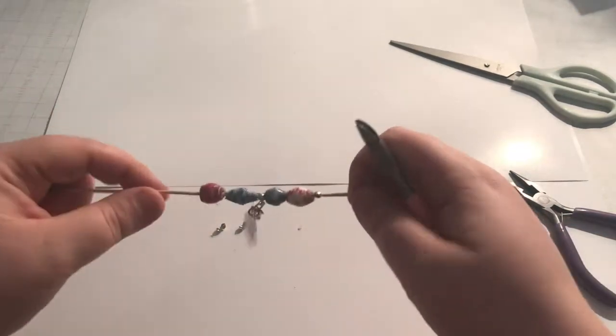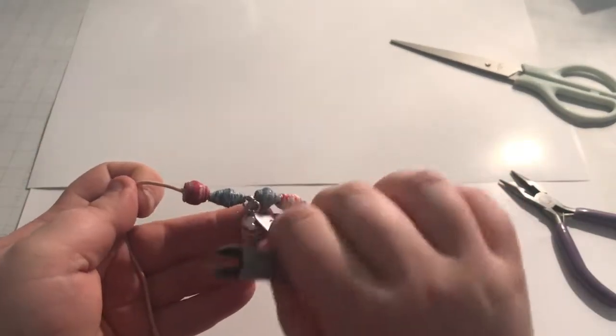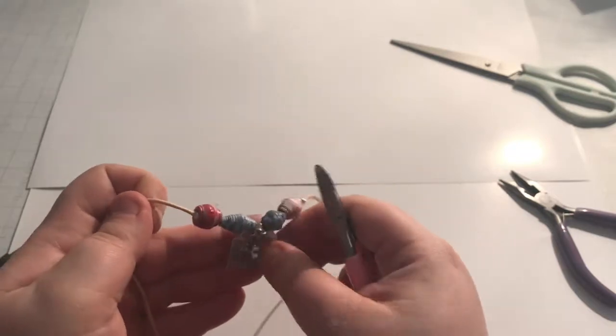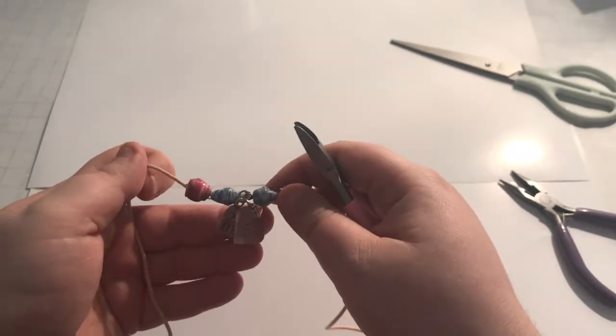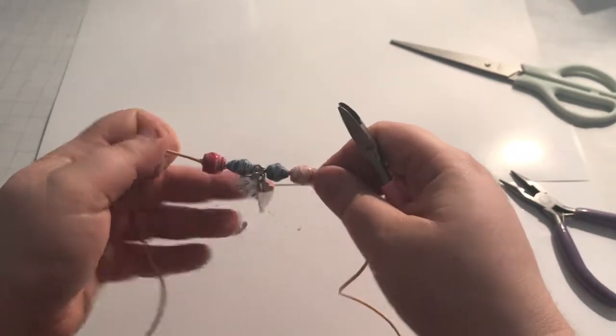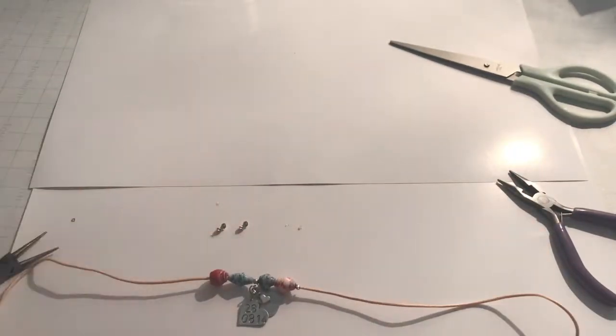So you're left with this lovely bracelet with the charm and everything that you need there. And we've got left two crimp beads.